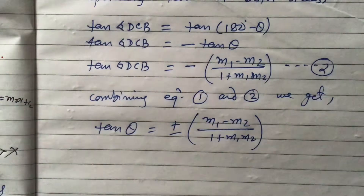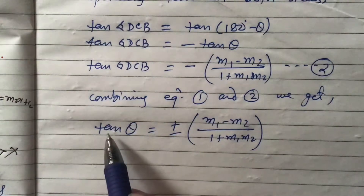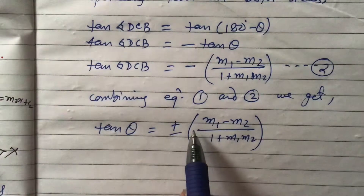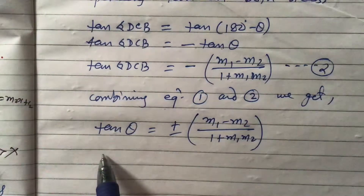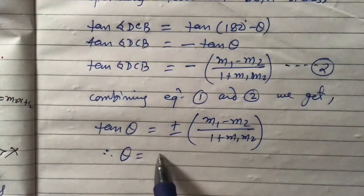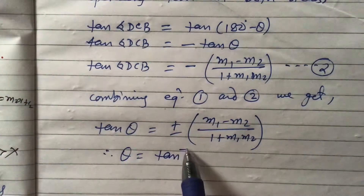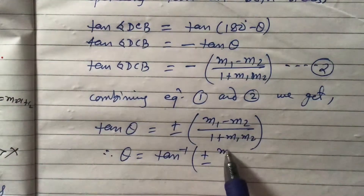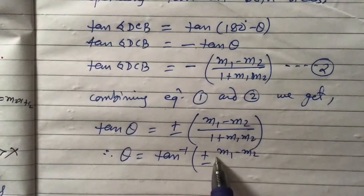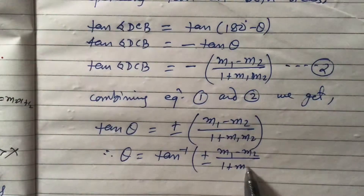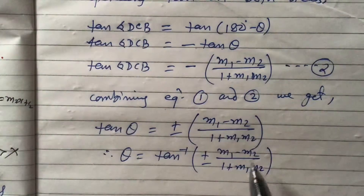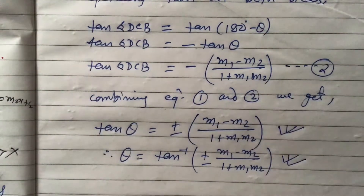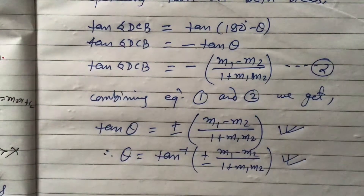If you want to express just the angle theta, transfer tan to the other side using inverse: theta = tan⁻¹[±(m1 − m2) / (1 + m1·m2)]. You can write the formula either way.